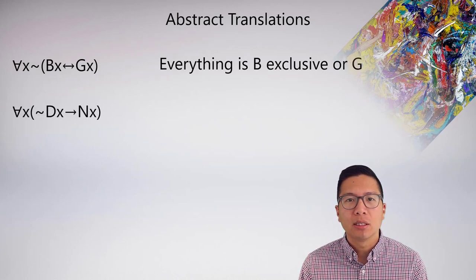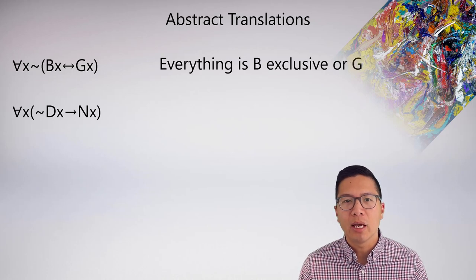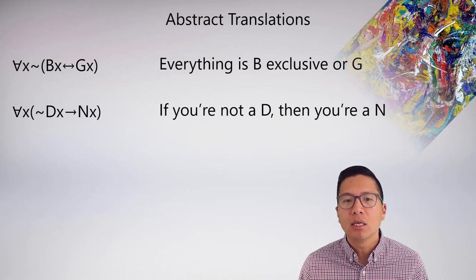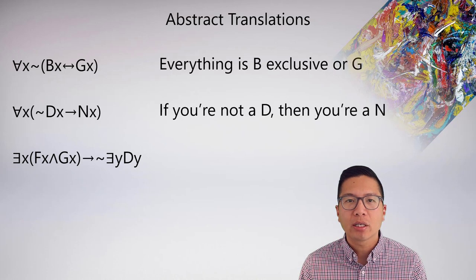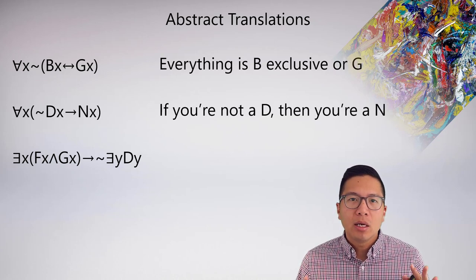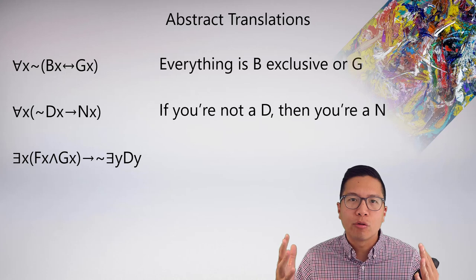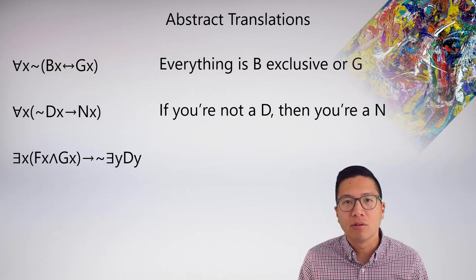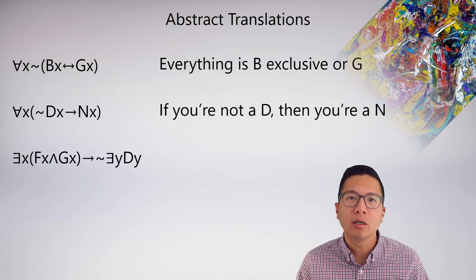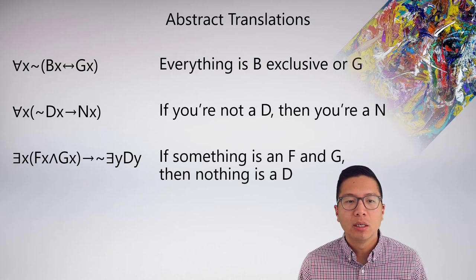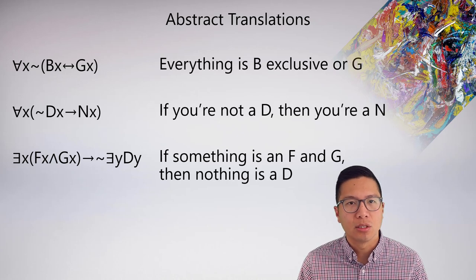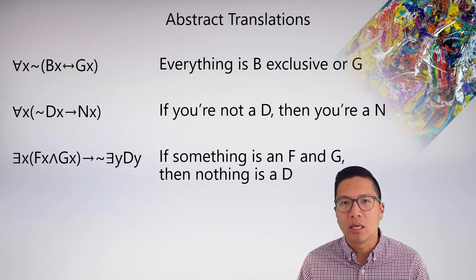For 'for all x, negation dx arrow nx': this is just a conditional where the group is not-d and the property is n, so it translates to: if you're not a d, then you're an n. Finally, 'there exists x, fx and gx' as the antecedent and 'negation exists y, dy' as the consequent: the main connective is the conditional, so this translates to: if something is an f and a g, then nothing is a d, because it's not the case that there exists something in the d predicate.